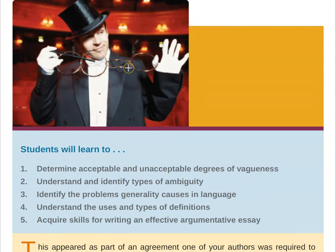We're going to focus on determining the acceptable and unacceptable degrees of vagueness, as well as understanding and identifying types of ambiguity and generality. More than that, what we really want to do is figure out when vagueness, ambiguity, or generalities are okay and can add some flair to our writing, and when they just muddy our thinking. Being able to identify these things is really important to avoiding the pitfalls involved with this sort of language.